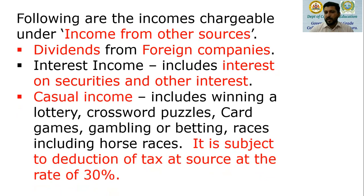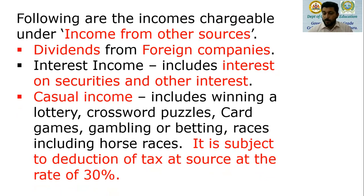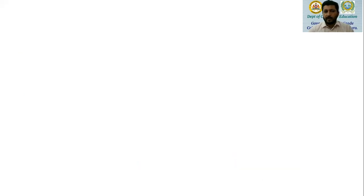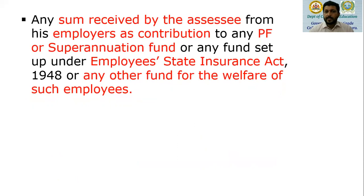Next, we have casual income. Casual income includes lottery winnings, prizes, crossword puzzles, card games, gambling or betting, and races including horse race, camel race, and dog race. These incomes, if earned, are treated as casual income, and such casual incomes are subject to TDS — tax deducted at source — at the rate of 30%.